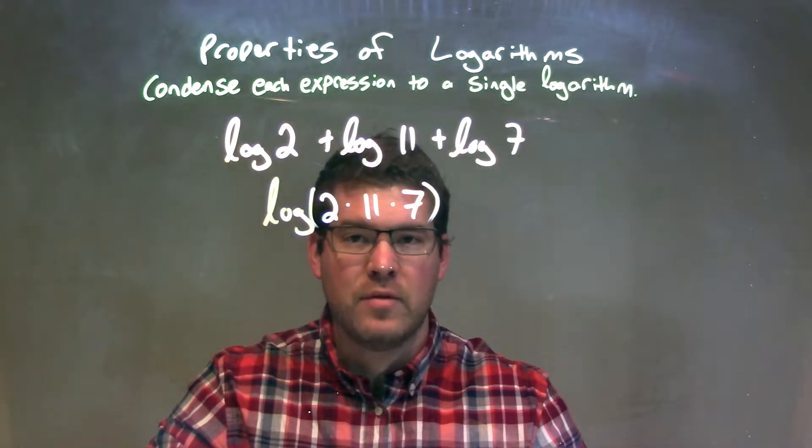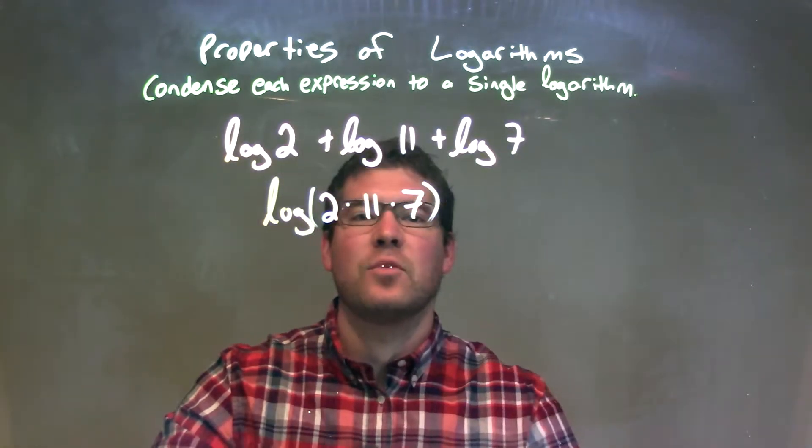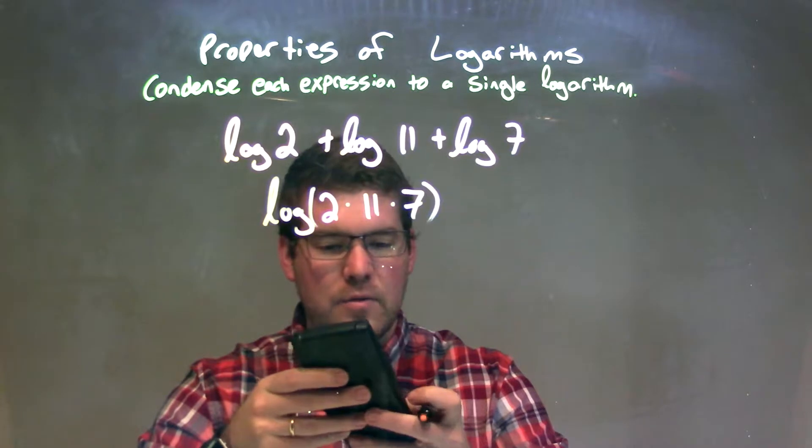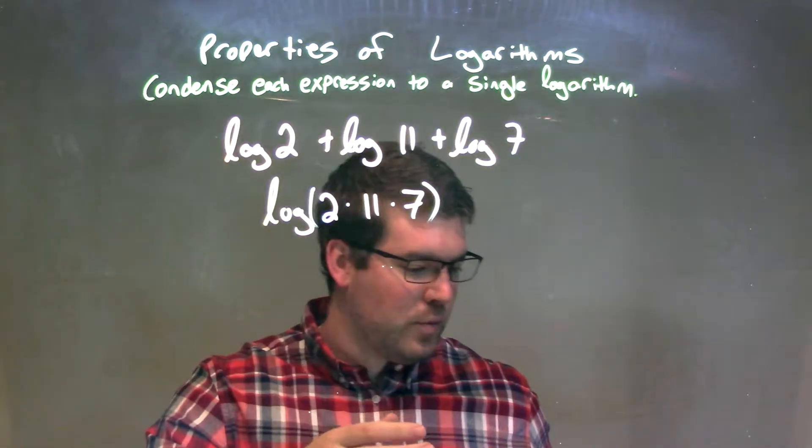Well, it's 2 times 11 times 7. 2 times 11 is 22, and 22 times 7, I don't know off the top of my head, is 154.